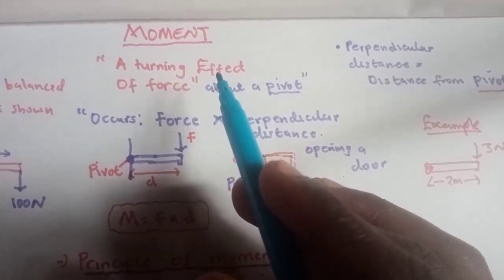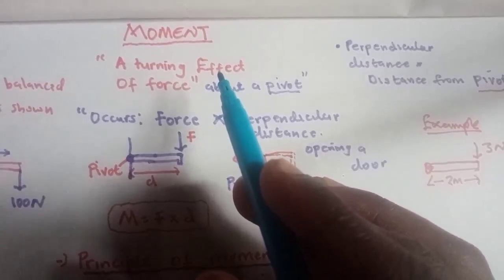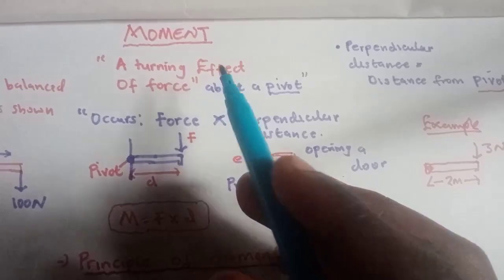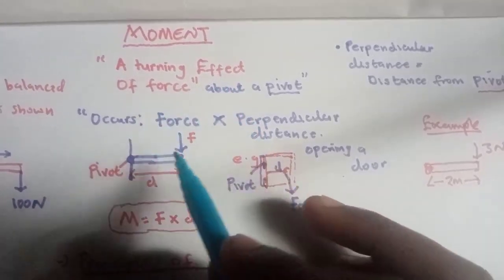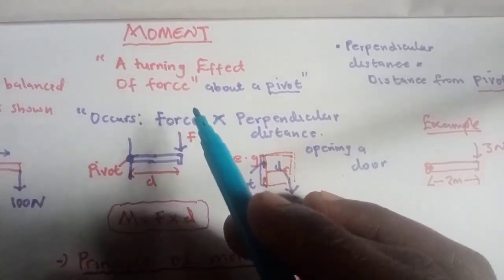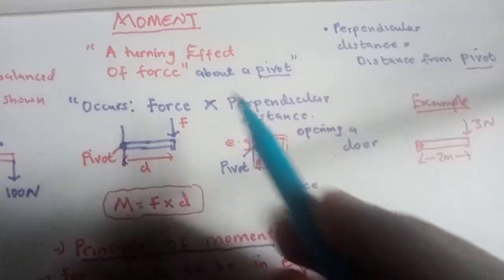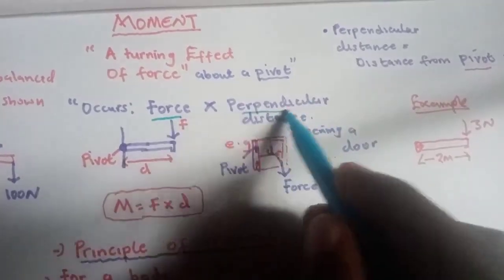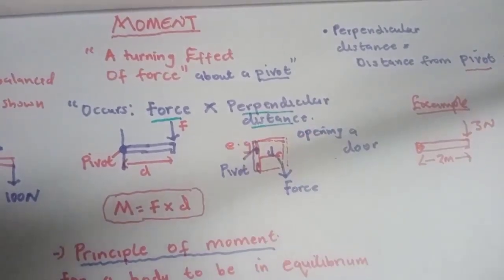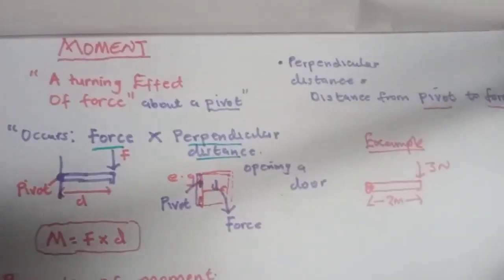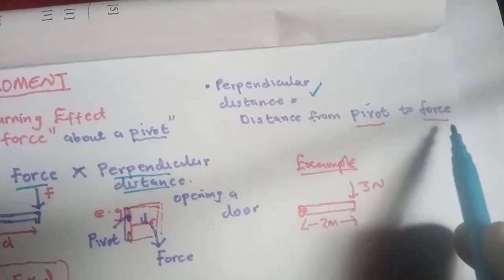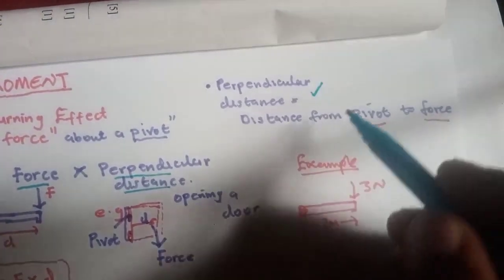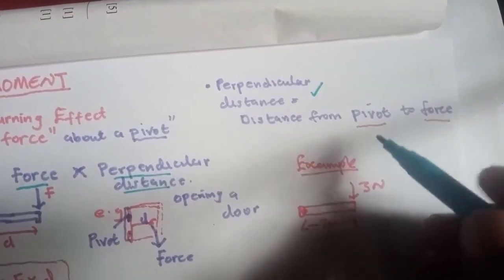For instance, when you are opening a door, you are applying a force on the door and the door will move. The door is attached somewhere, and where the door is attached, that's where the pivot is. A pivot is simply a point of attachment.